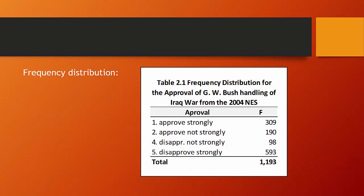In a frequency distribution, what we're showing is just a tabular summary of data with the frequency or number of items into each of our several non-overlapping categories. So in this table we're looking at the frequency distribution for the approval of George W.